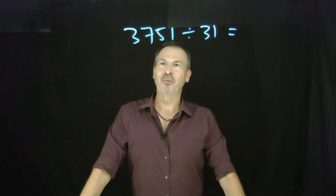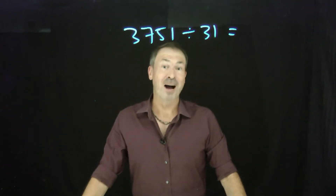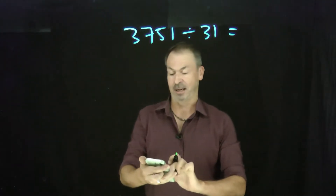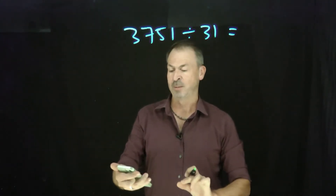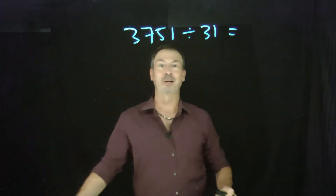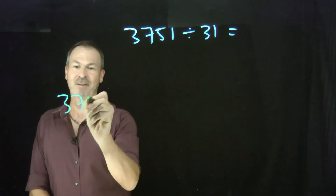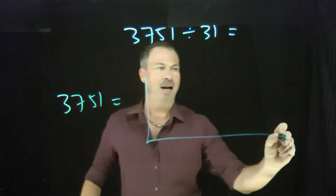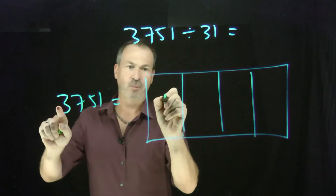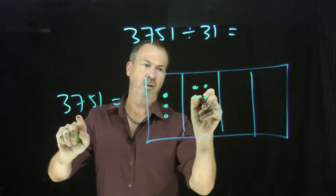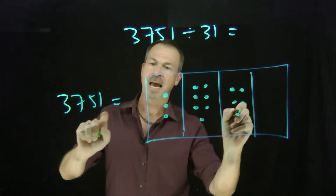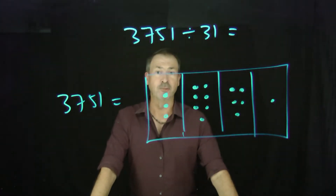Okay, let's do another example. Let's do 3751 divided by 31, and let's do it the dots and boxes way. I'm curious what the answer is — let me use my calculator. 3751 divided by 31, according to my calculator, is 121. Alright, so we should see the answer 121. Let's see if we do. 3751 — what does that look like? I need the thousands, the hundreds, the tens and the ones. Three thousands, seven hundreds, five tens, and one. There's 3751.